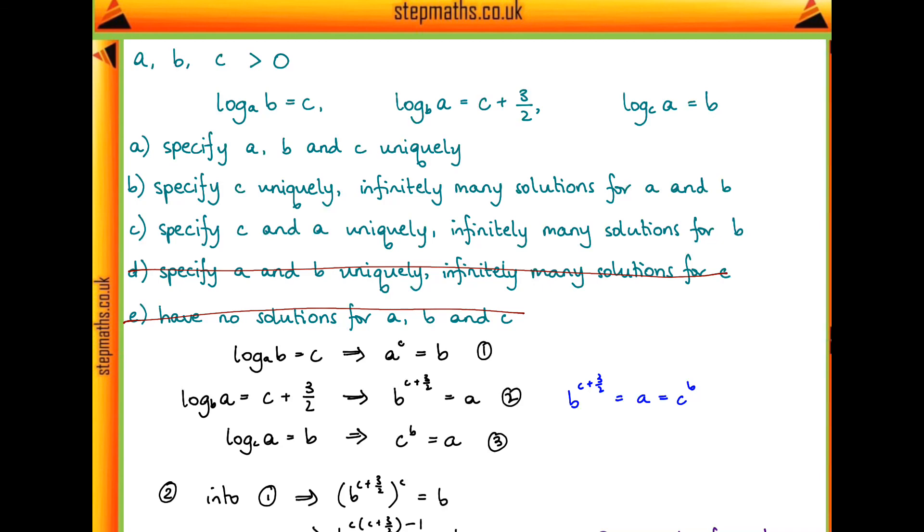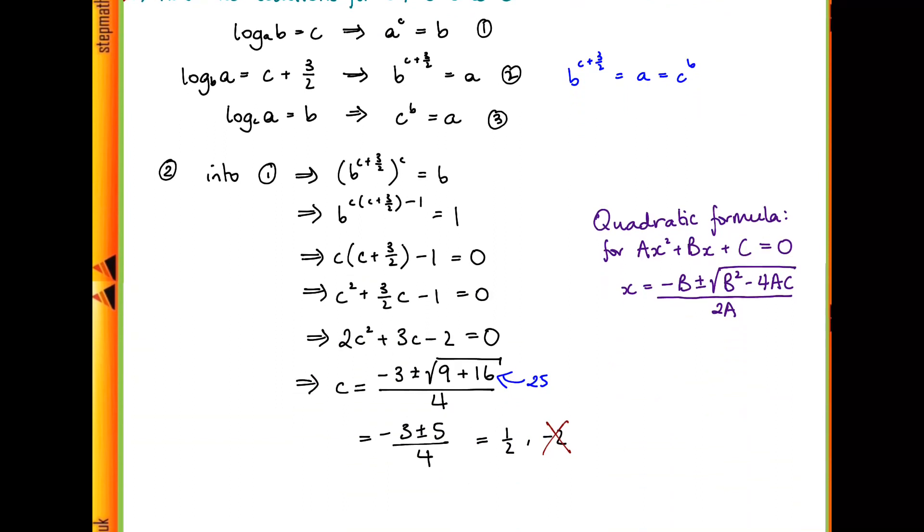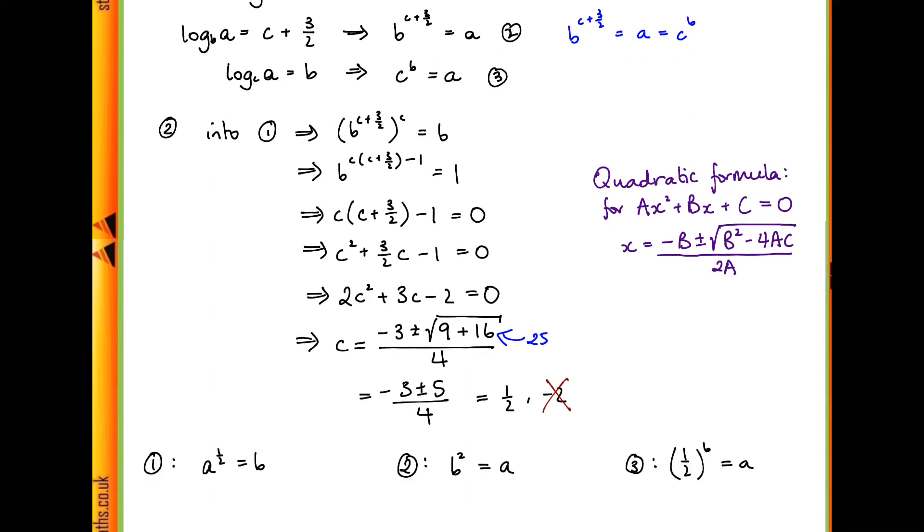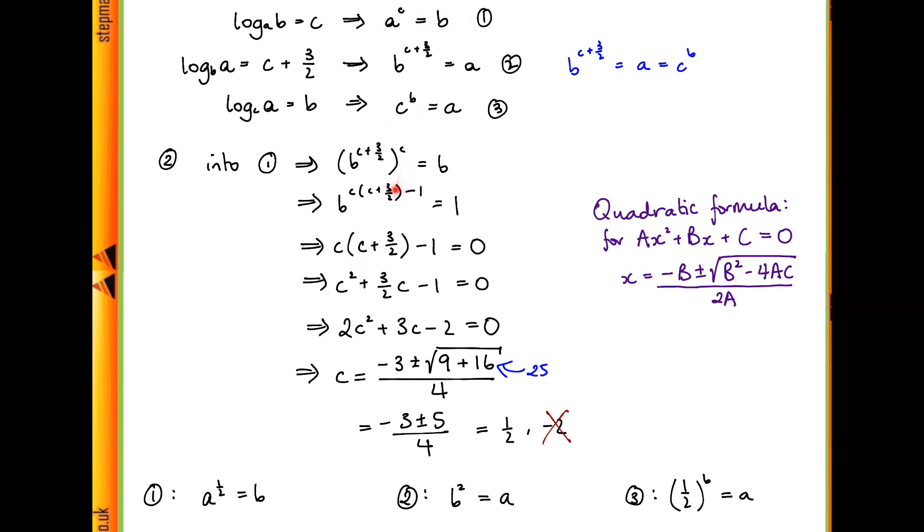Now that we know that c is a half, we can try and work out a and b. If I rewrite our equations using c equals a half, just to see what relations we have between a and b, we see that equation 1 becomes a to the half equals b, equation 2 becomes b squared equals a, which is just the same as 1 but all squared, and equation 3 becomes a half to the power of b equals a.